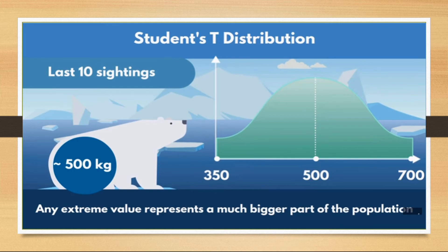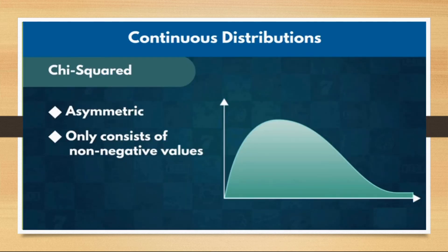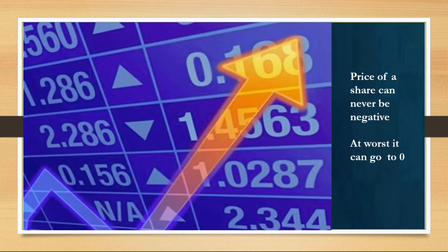The next continuous distribution we will discuss is chi-squared distribution. It is an asymmetric distribution as it consists of only non-negative values. Because of this characteristic, chi-squared may not often mirror natural events, but it finds heavy usage in financial data analysis. For example, a share price can never be negative — at worst it can be zero, and in general it will always be a positive value.